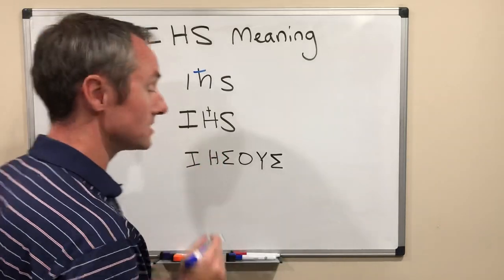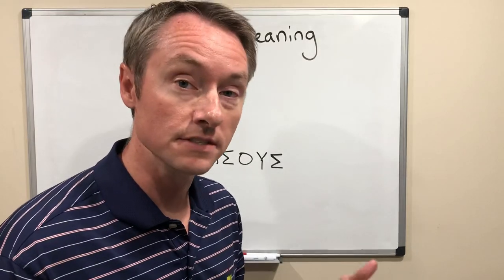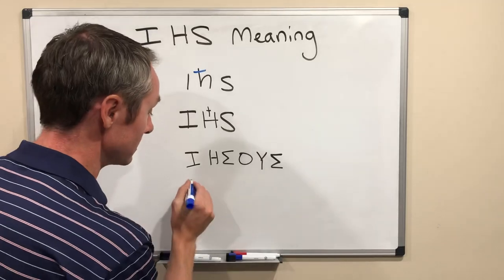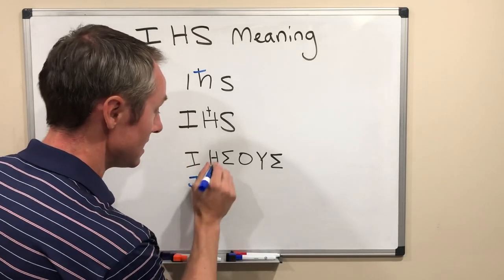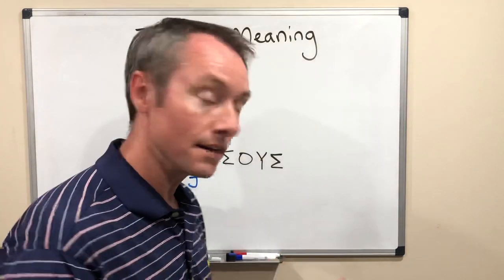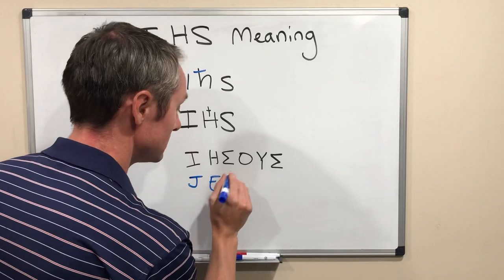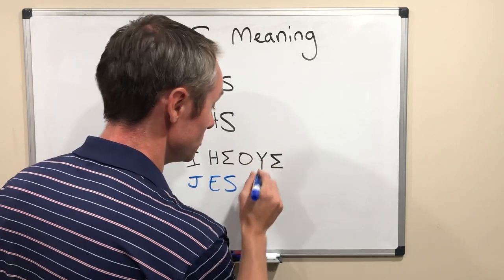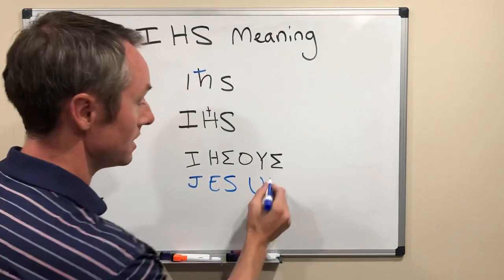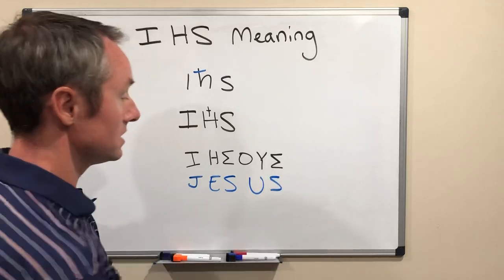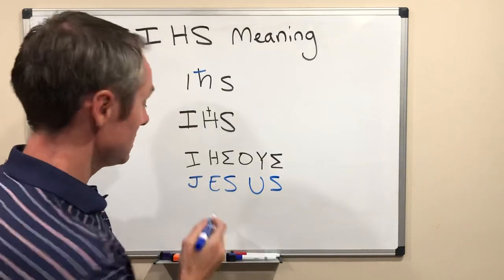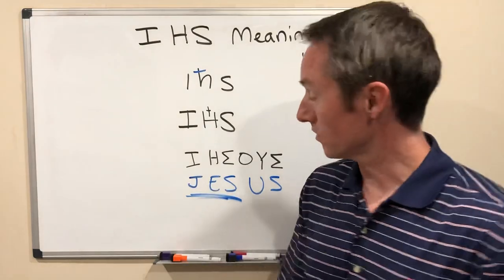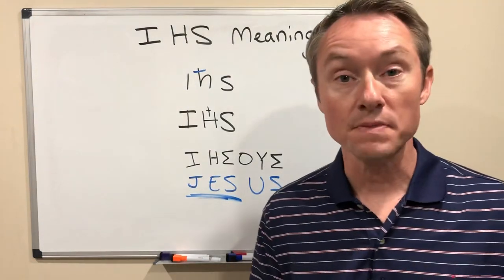IHS are the first three letters of Jesus's name in Greek. So if I rewrite this in English: I becomes J, H or eta becomes E, the sigma becomes S, rather than OU we might just write U, and then of course — Jesus. So Jesus, that's what IHS stands for: those first three letters of Jesus's name.